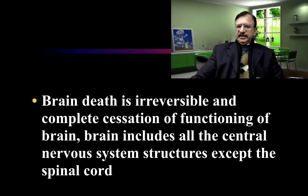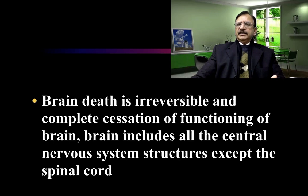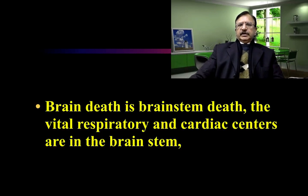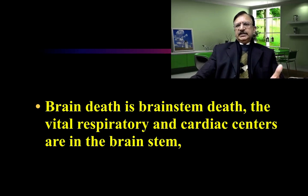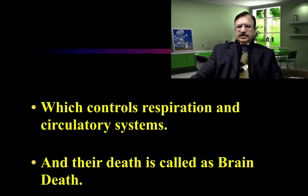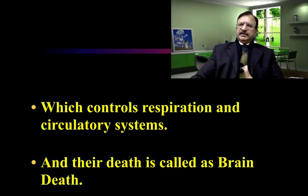Brain death is the irreversible and complete cessation of functioning of the brain, which includes all central nervous system structures except the spinal cord — because reflexes can still be seen after brain death, as they are dependent on the spinal cord. Brain death is brain stem death: the vital respiratory center and the cardiac centers are in the brain stem. Death of these centers controlling respiration and circulation is called brain death.